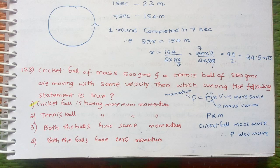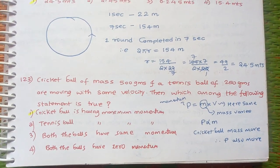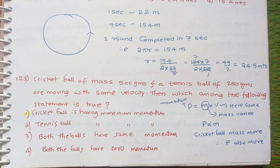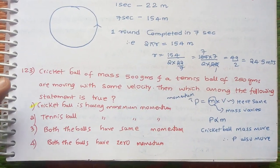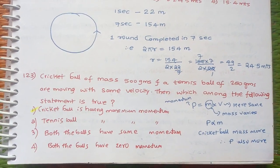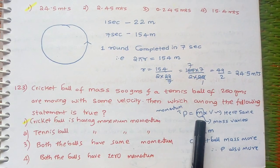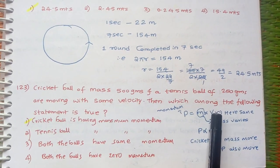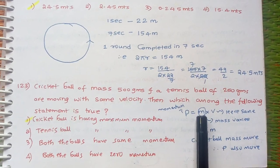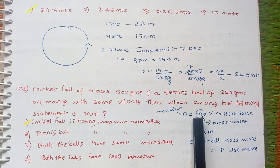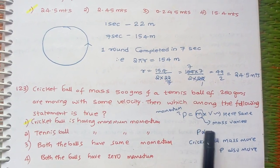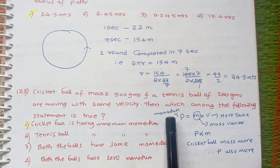This is also an easy question. Cricket ball of mass 500 grams and tennis ball of mass 250 grams are moving with same velocity. Then which statement is true? The answer is cricket ball has maximum momentum. Because momentum is mass times velocity. Both balls are moving with same velocity, but mass is varying. Momentum and mass are directly proportional.